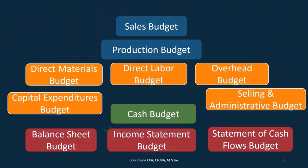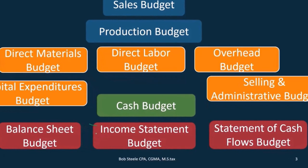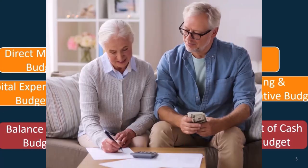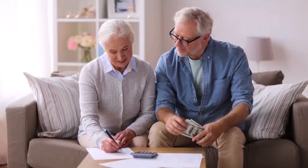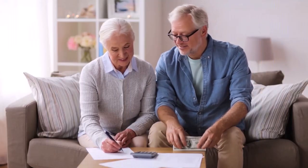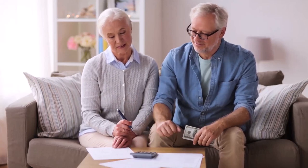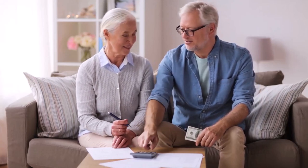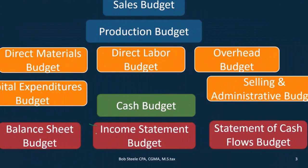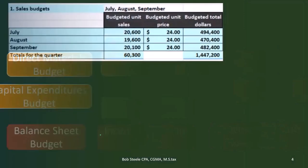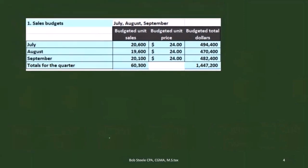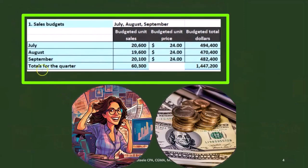Now we're going to move to one of the major statements — of course one of the major statements we think of when we think of the budget is the income statement, because we're usually thinking about how we're going to perform over time. That's what the income statement captures: the timing of how we're doing. So that's what we're going to move to at this point.